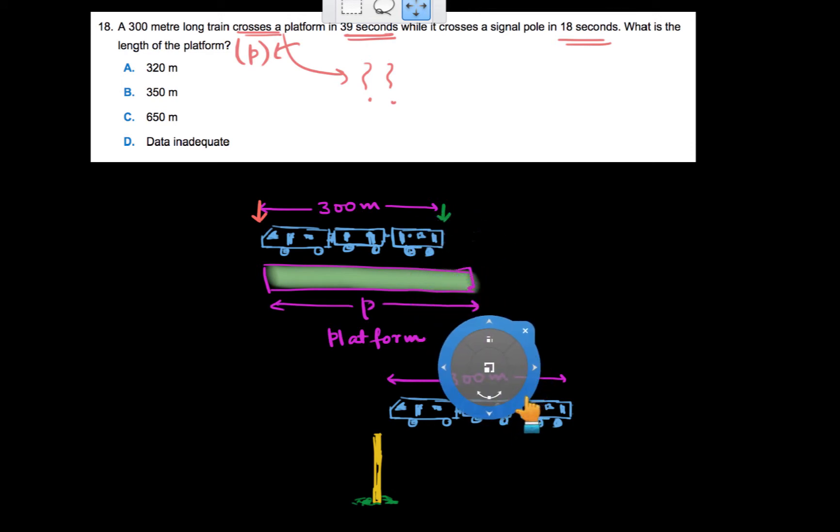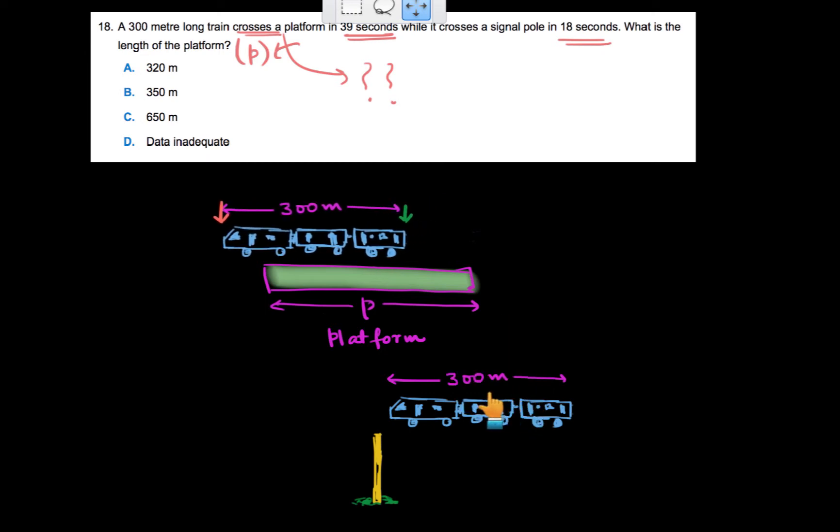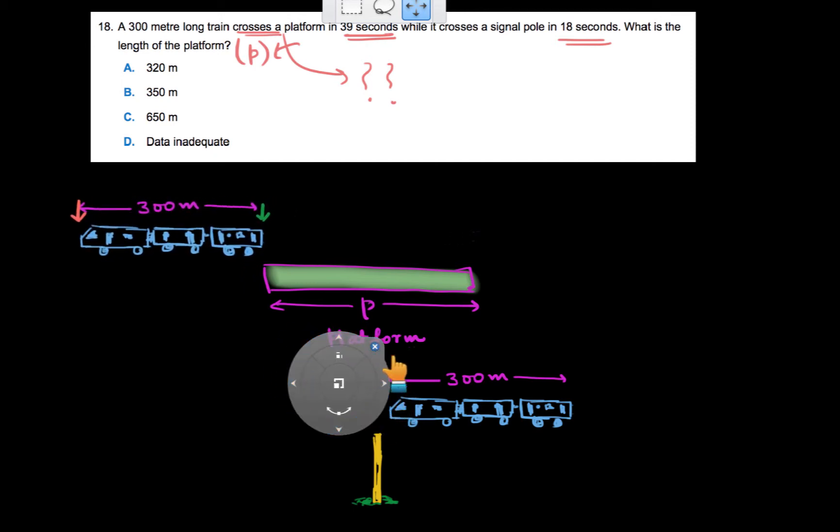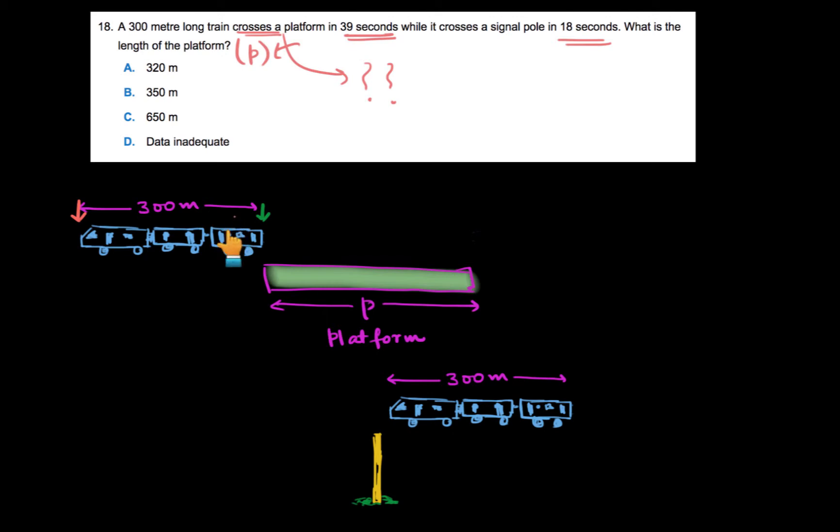Now in order to say that the train has completely crossed the platform, the end part of the train should have crossed the whole platform as well. Hence, we can say that the train has to travel a distance of P plus its own distance of 300 meters in order to cross this platform.